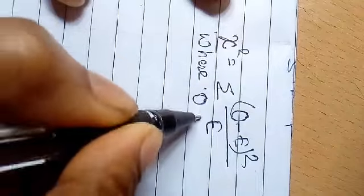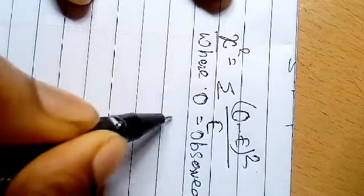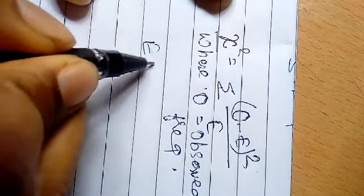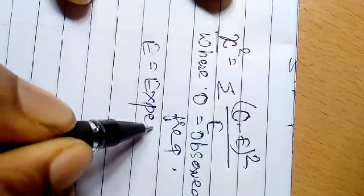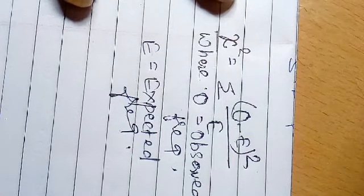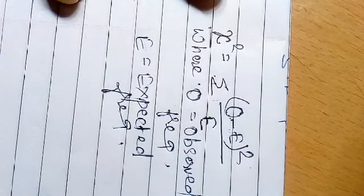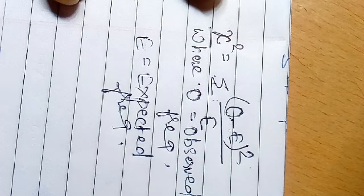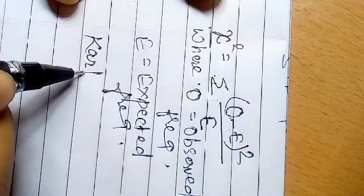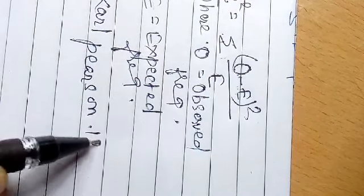In the formula, O is the observed frequency and E is the expected frequency. The formula is the summation of (O minus E) whole square divided by E. This test was first used in testing statistical hypotheses by Karl Pearson in the year 1900.